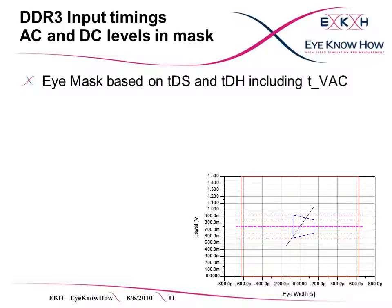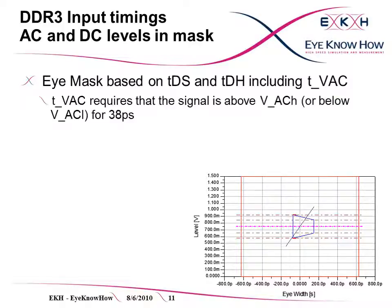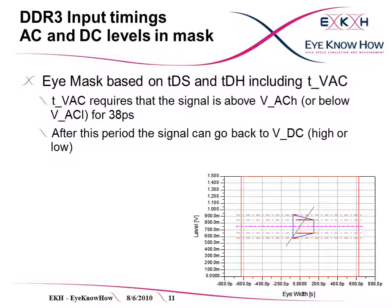We can try to add TVAC as well. To fulfill the spec, the signal needs to stay above the AC level after the last AC crossing. So let's draw a 38 picosecond TVAC line starting at the minimum setup time. After this time, the signal can go down to the DC level. Overall, this results in the red mask shape.